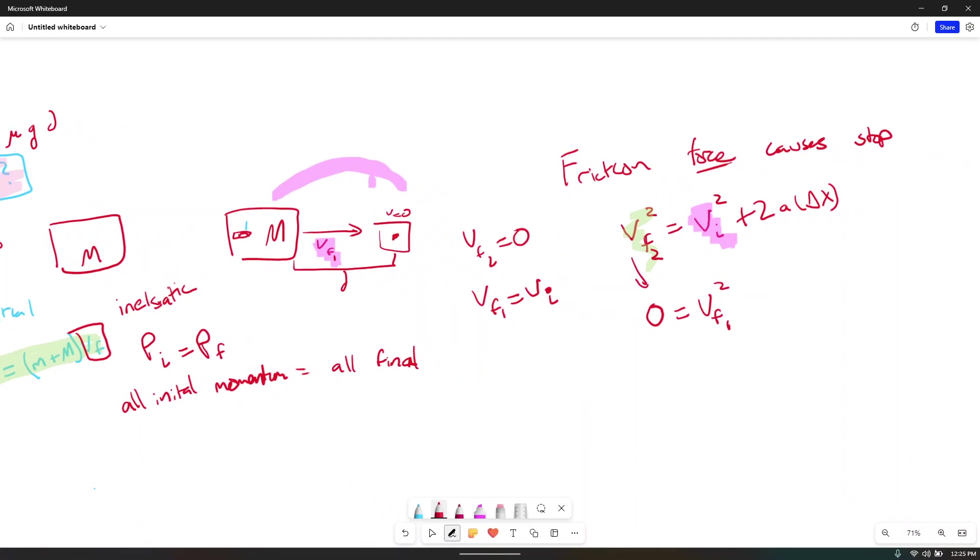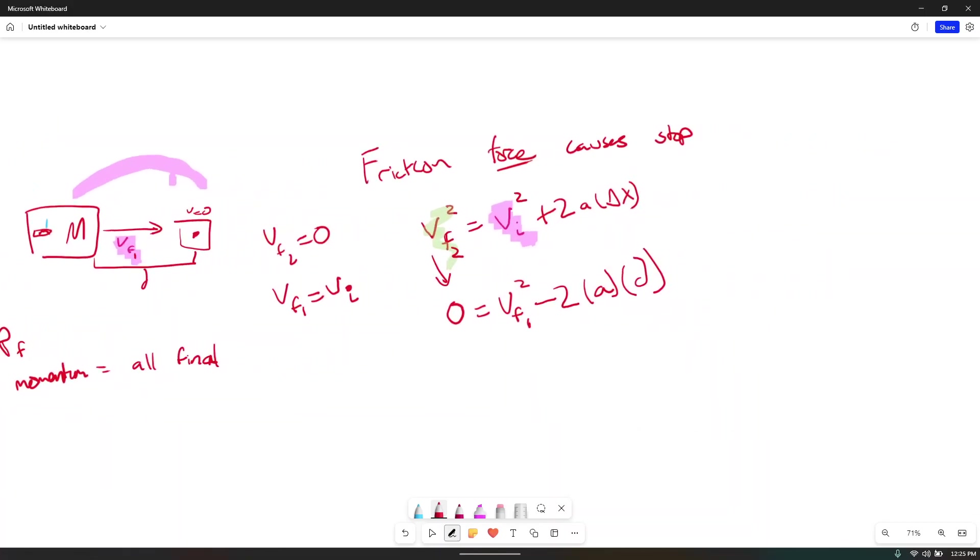If we write out our formula, zero, this entire term goes to zero because you end at a stop. Velocity final squared minus two. Our acceleration, we don't know yet, but we know our distance is D, right? Because that's given to us in the question. So again, what do we not know? Well, we don't know what this A is. So let's do some calculations for A.